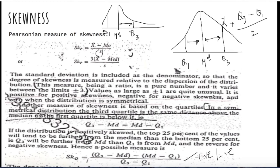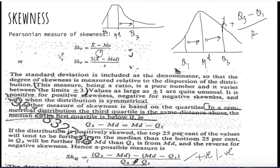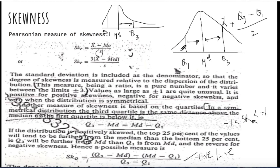The quartile measure of skewness ranges from minus one to plus one, whereas the Pearsonian measure of skewness ranges from minus three to plus three.